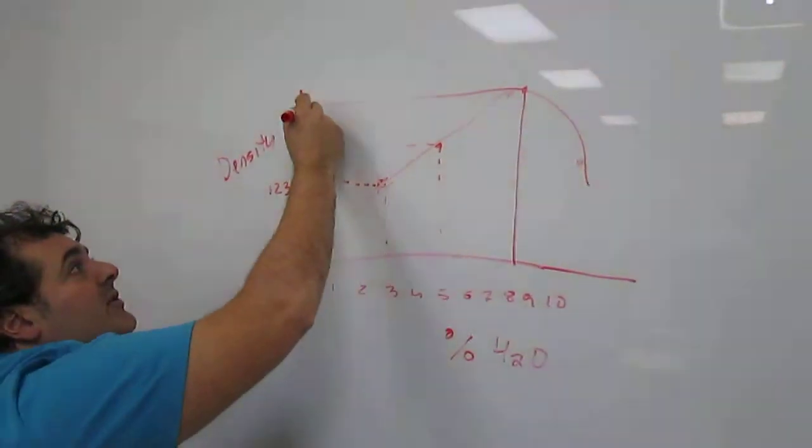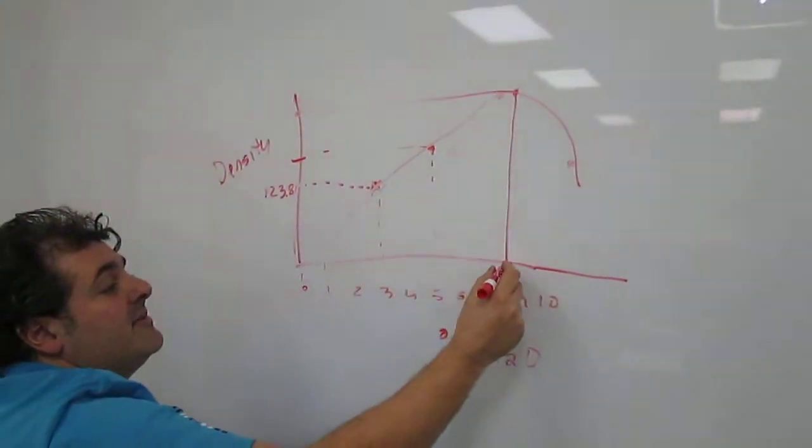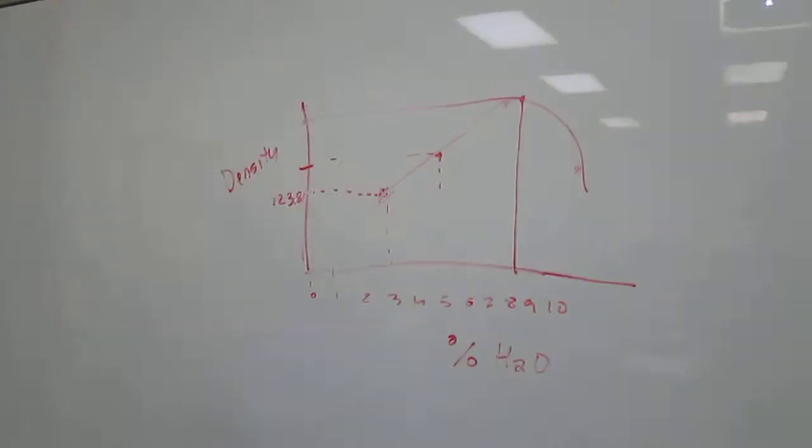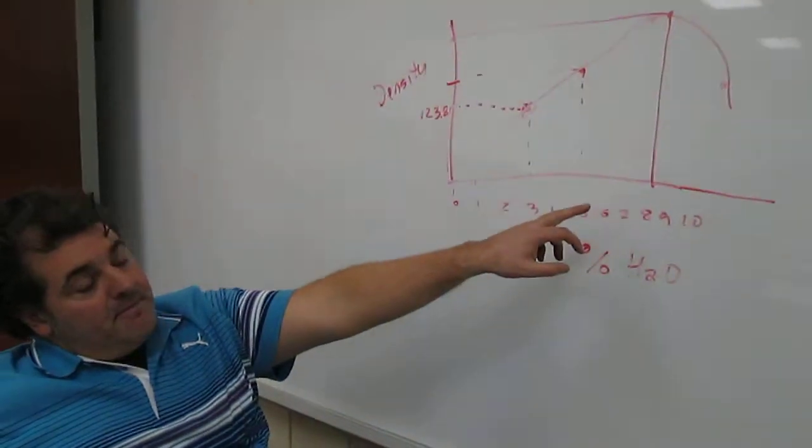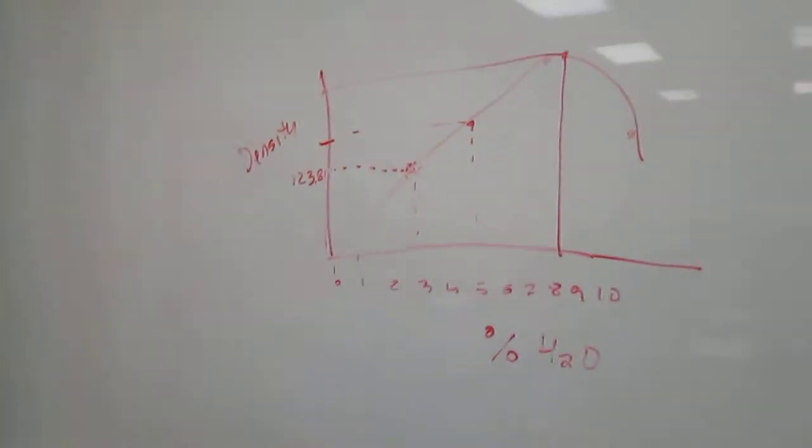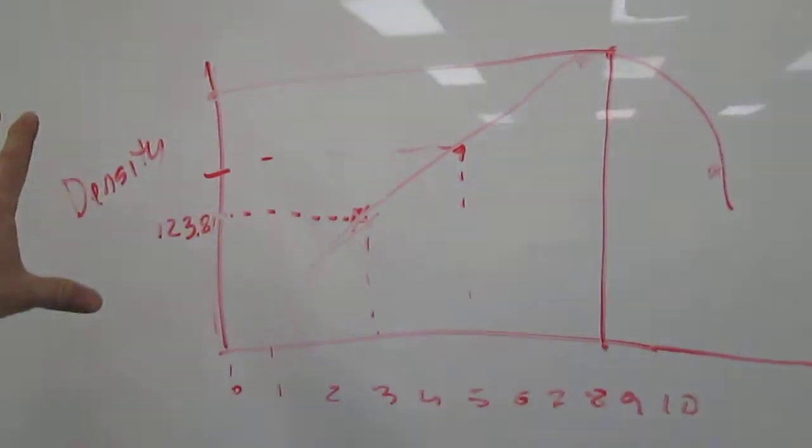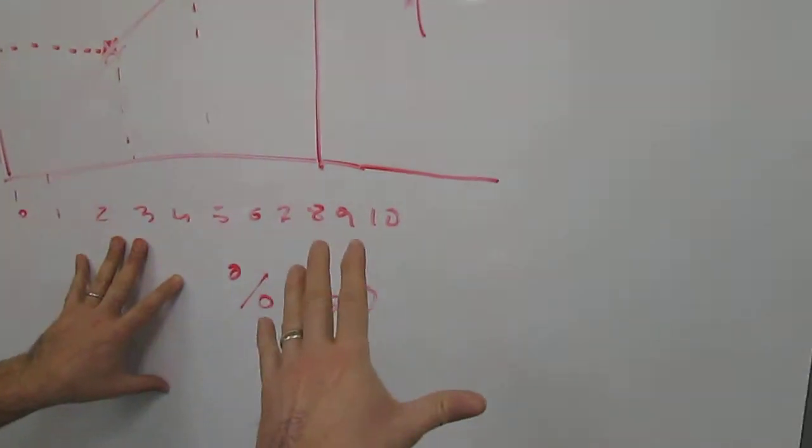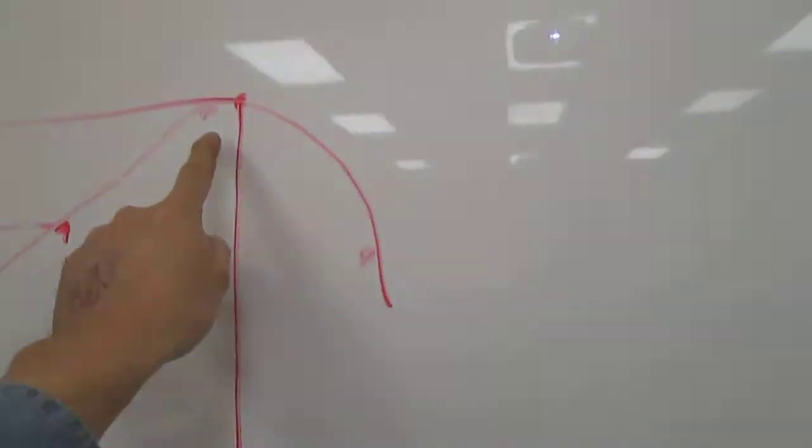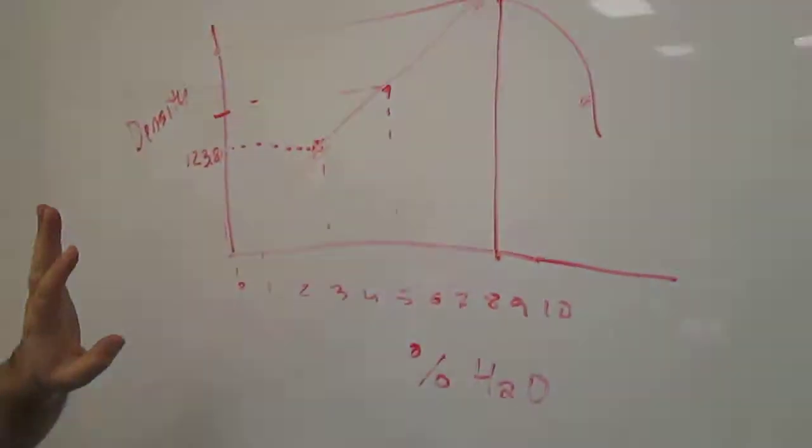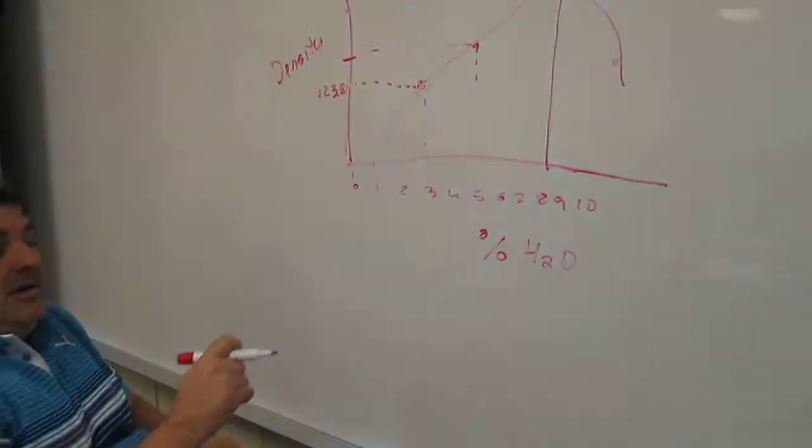Whatever this number is and whatever this number is, is your maximum dry density and your optimal moisture content. So the density from the three proctor tests, or four, and the moisture is over here, moisture we added every time. That's the maximum density. It's solved by graphical method.